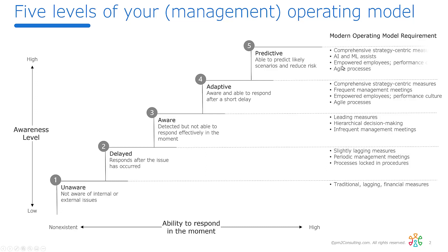Predictive is what we're beginning to see more of — organizations have those same comprehensive strategic-centered metrics, but now with AI and ML assists, looking at things the human brain can't detect, 7 by 24, and identifying abnormalities we don't think to look for. Again, empowered employees, a performance culture, and agile processes. That's the journey organizations are on. Hopefully this helps you figure out where you and your organization are on this journey.